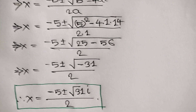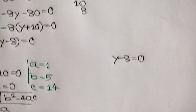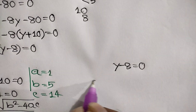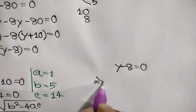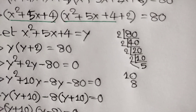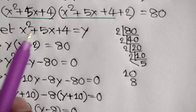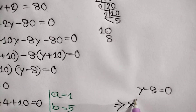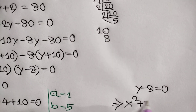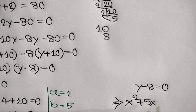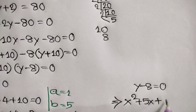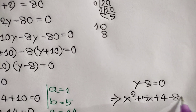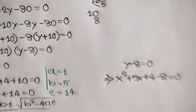For the second case, y = 8, so x² + 5x + 4 − 8 = 0, which gives x² + 5x − 4 = 0.